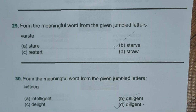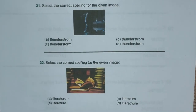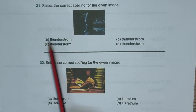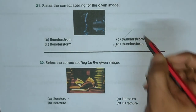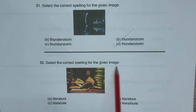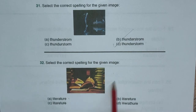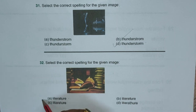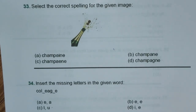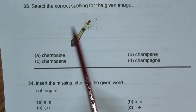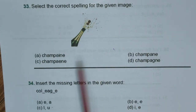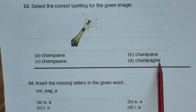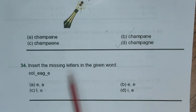Question thirty-one: select the correct spelling for the given image. We are looking for 'thunderstorm,' and the correct spelling among A, B, C, D is option D — thunderstorm. Question thirty-two: select the correct spelling for the given image. The image shows books and the options indicate we are looking for 'literature' — only option A has the correct spelling, so we'll mark A as the right answer. Question thirty-three: the image indicates we are looking for 'champagne,' and the correct spelling C-H-A-M-P-A-G-N-E is in option D, so D is the right answer.